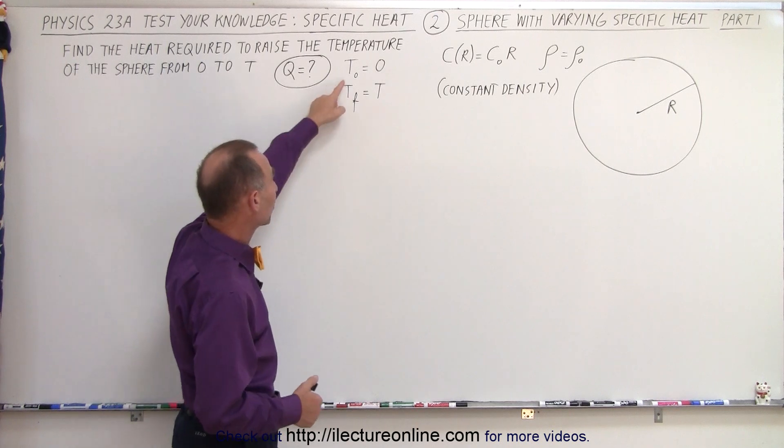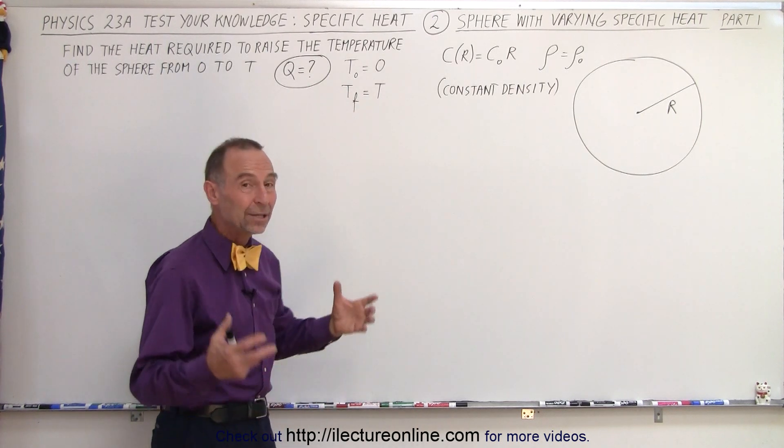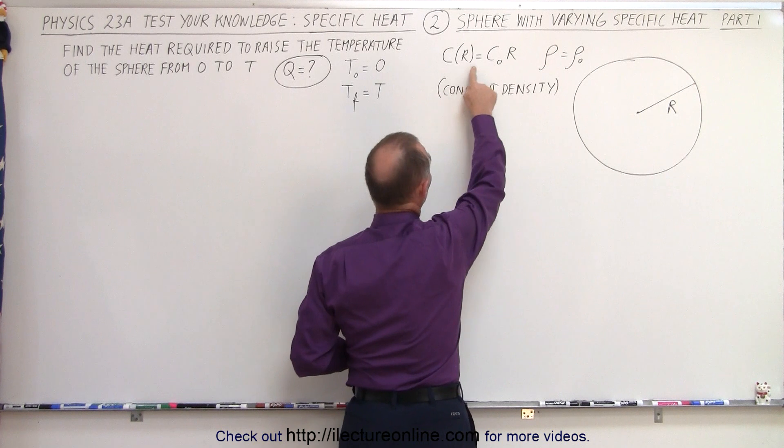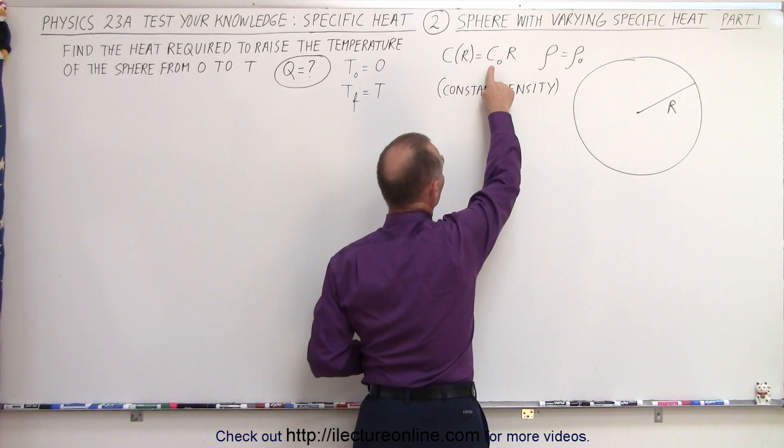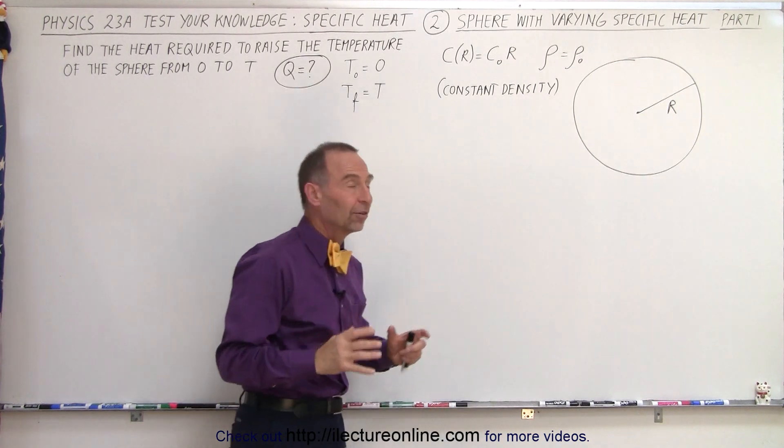So we can assume that the initial temperature was 0, the final temperature is T, and we're trying to find the total heat required to make that temperature change, understanding that the specific heat is actually a function of the radius. So there's a constant, C sub-naught, times the radius, that being the specific heat of the sphere.